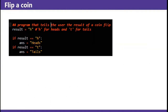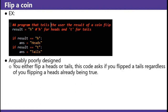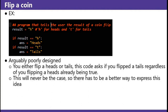Flip a coin. This is a program that tells the user the result of a coin flip. The result is H. If the result is H, the answer is heads. If the result is T, the answer is tails. This is arguably poorly designed — you either flip heads or tails. This code asks if you flip tails regardless of you already flipping heads being true. This will never be the case, so there has got to be a better way to express this idea.